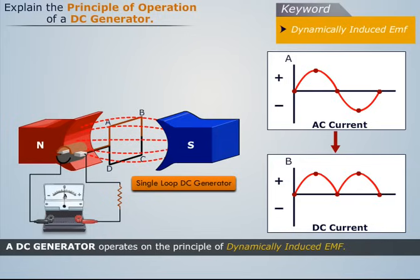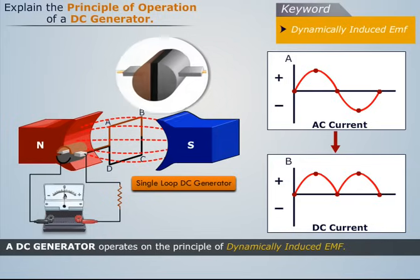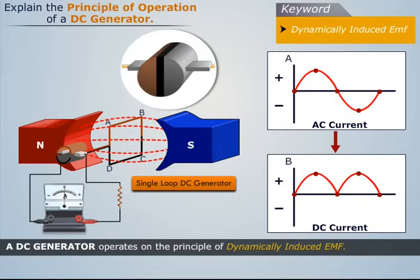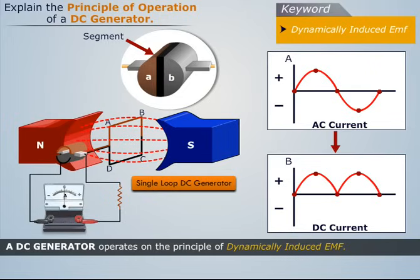These split rings are made of a conducting cylinder which is cut into two halves or segments, insulated from each other by a thin sheet of some insulating material like mica. The ring segments are also kept insulated from the central shaft and are connected to the ends of the coil and the carbon brushes.